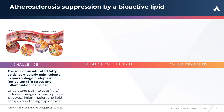Bioactive lipids produced through de novo lipogenesis, such as palmitoleate, can significantly influence lipidomic remodeling of the endoplasmic reticulum membranes and macrophages, which may have beneficial impact on atherosclerosis. However, the potential role of palmitoleate on endoplasmic reticulum stress and inflammation remains unclear, which is the challenge this study sought to address.